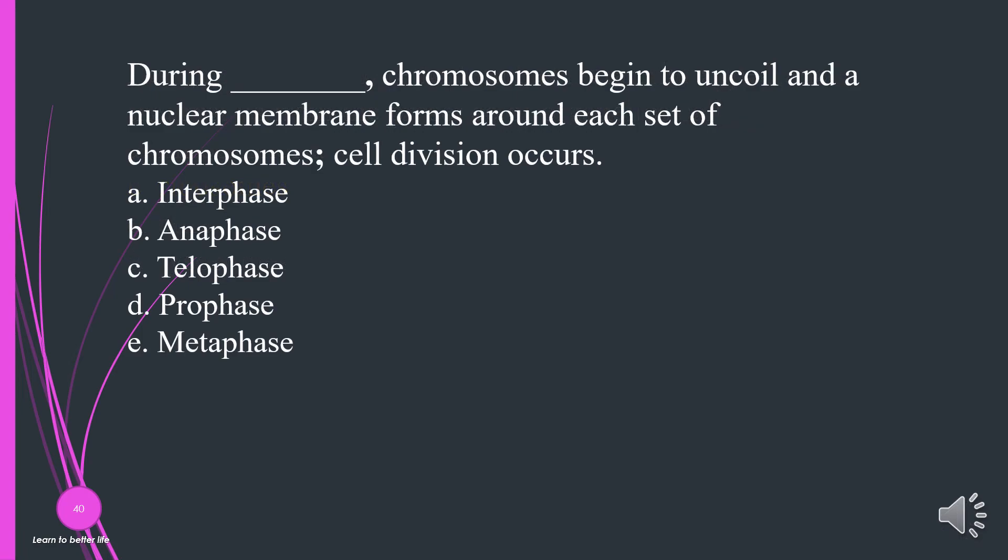During what phase, chromosomes begin to uncoil and a nuclear membrane forms around each set of chromosomes? Cell division occurs? A. Interphase. B. Anaphase. C. Telophase. D. Prophase. E. Metaphase. The answer is C, telophase.